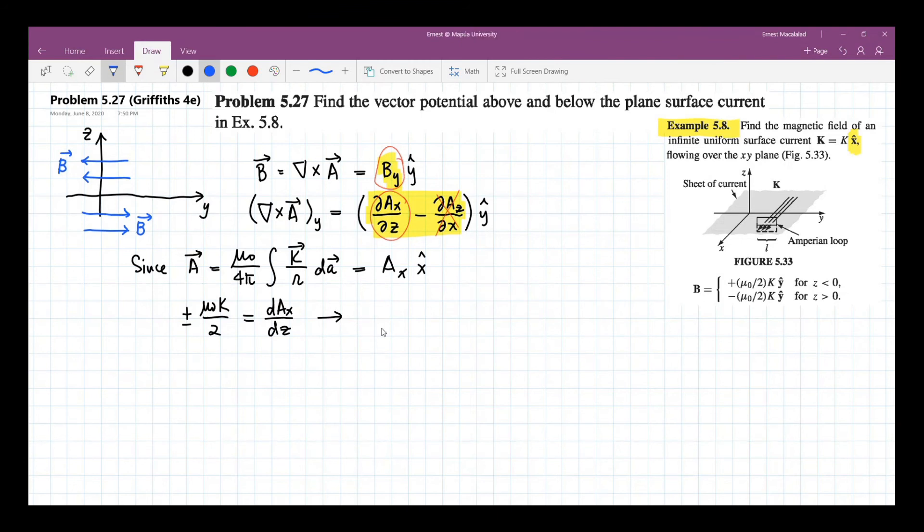This is positive mu naught k over 2 z x hat when z is less than 0, and this is negative mu naught k over 2 z x hat if z is greater than 0.